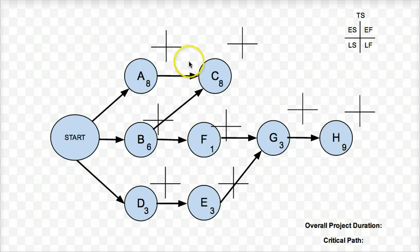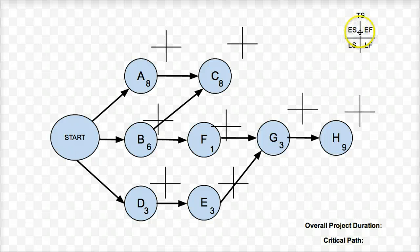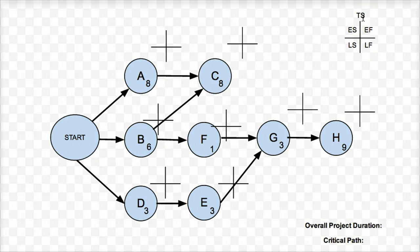I'm going to draw crosshairs beside each of the different activities, usually at the top right. Those crosshairs are just to fit in all the different numbers represented in the legend on the top right of my diagram: early start and early finish in the top two quadrants, late start and late finish in the bottom two quadrants, and the total slack of the activity at the very top. That's explained in more detail in the previous tutorial.